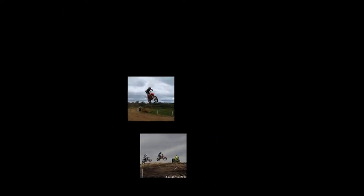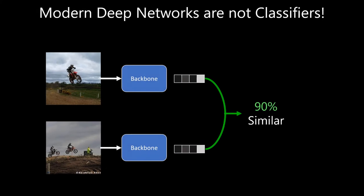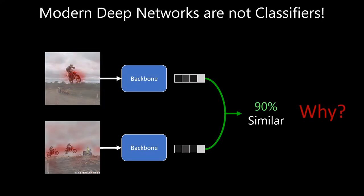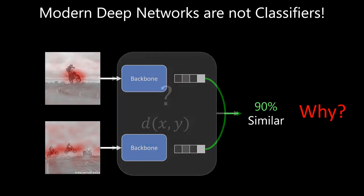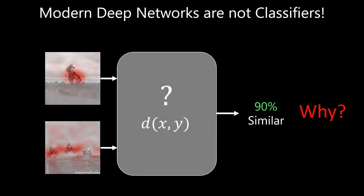In this work, we focus on these systems that compare pairs of images using a similarity function. Our aim is to understand what motivates their behavior, and furthermore to understand how they work even when we don't have access to the underlying code or implementation.